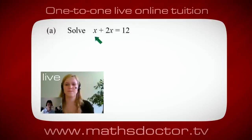OK, Marie, so let's have a look at this one. Solve x plus 2x equals 12. So what do you think you do first? OK, well, I want x on its own, so I would put x equals 12 minus 2x.